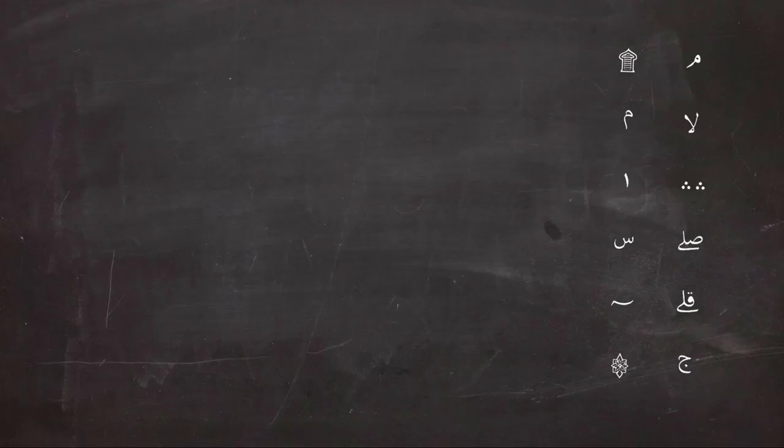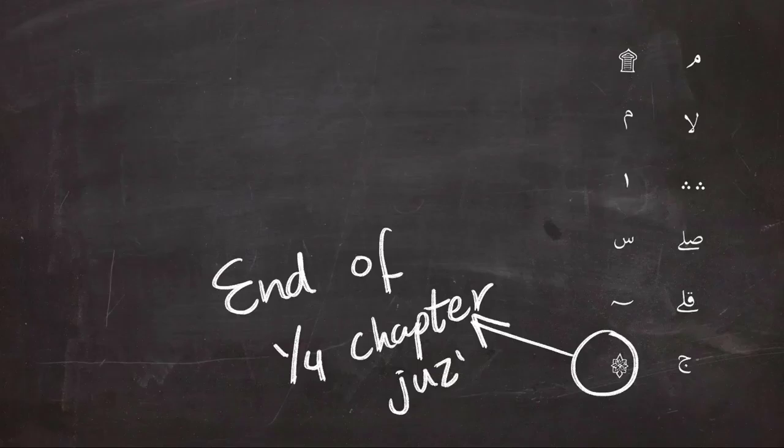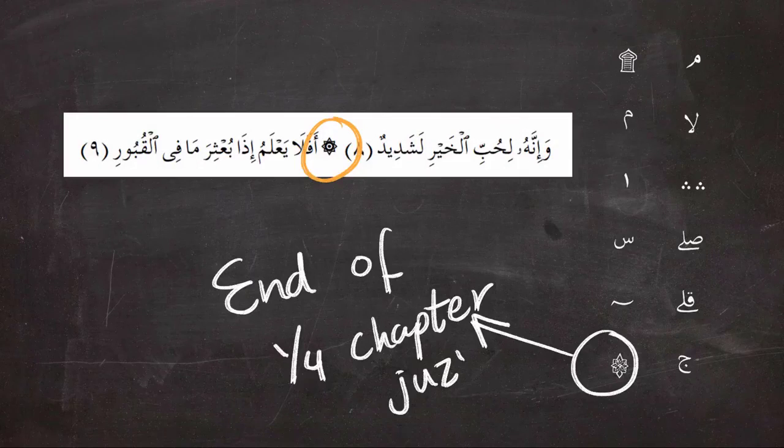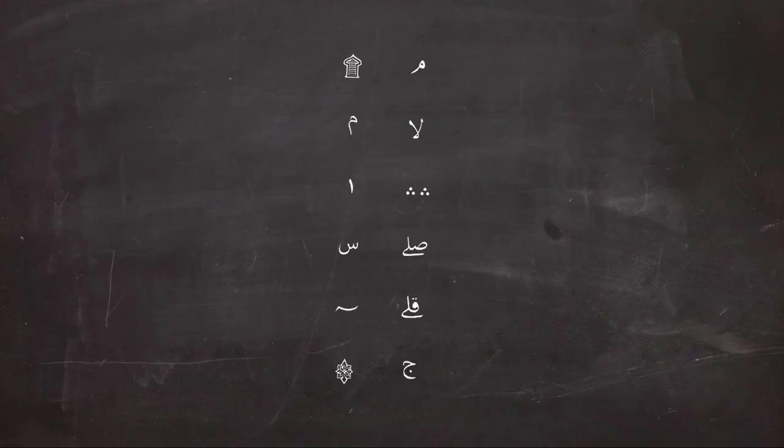The last sign is the end of the quarter of the chapter or Juz. The Juz is divided into eight quarters, and at the end of each quarter you'll see this sign. It doesn't involve any change in pronunciation—it's just for the division of the Quran.